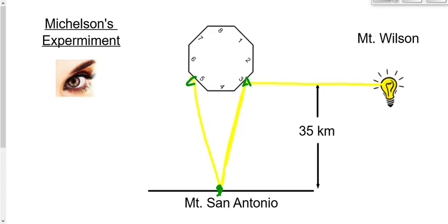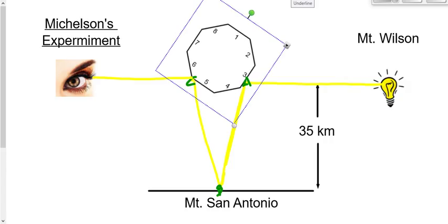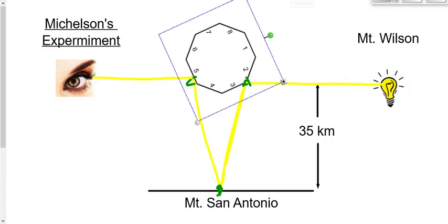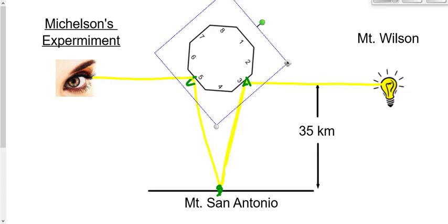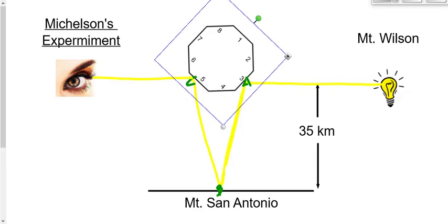If it's rotated exactly one-eighth of a rotation, then this light is now going to reflect and get observed by the observer. Is that okay? Right? If it's rotated a little bit less than that, the light doesn't get reflected in the right spot. A little bit more than that, the light doesn't get reflected in the right spot. It has to be exactly one-eighth of a rotation in order for the light to get observed by the observer.